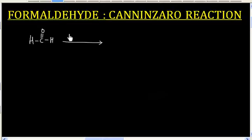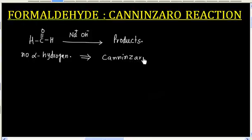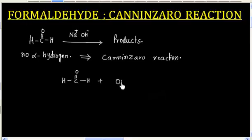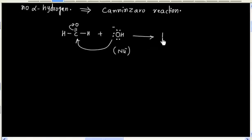We have formaldehyde reacting with NaOH. Formaldehyde has no alpha hydrogen, so in this case we will have the Cannizzaro reaction. In the first step, we will have nucleophilic attack — OH⁻ can act as a nucleophile and attack on the carbonyl carbon, giving us this product.